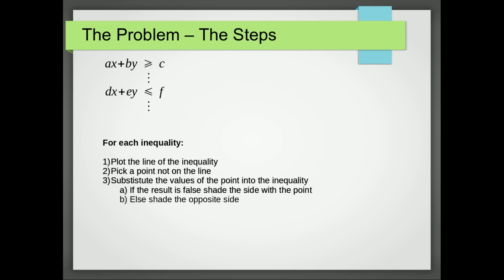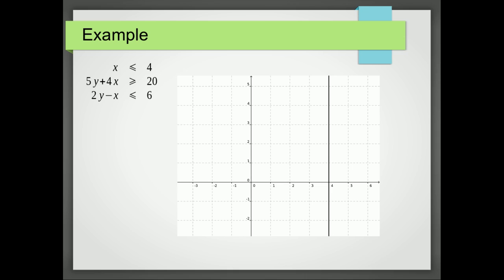So let's look at an example. The first thing I'm going to do is draw the line x equals 4. Then I'm going to pick a point that's not on the line. So I'm going to go for 0, 0. And so x is 0. Is 0 less than 4? Yes, it is. So I'm going to shade the side not with 0, 0 in.